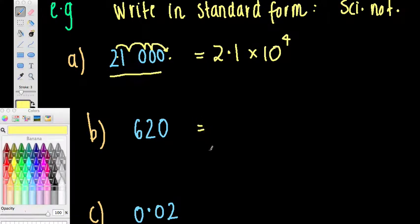Next one. Let's choose our first non-zero digit. Here it is here, 6. We'll put the decimal point after the 6. So this is 6.2. To what power of 10 must I multiply to get it to be 620? This is a nice easy one. 1, 2.